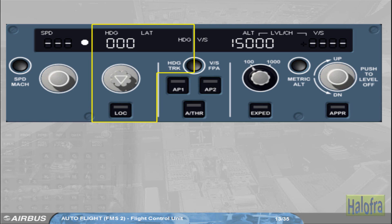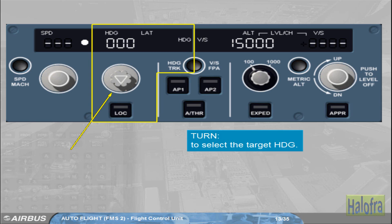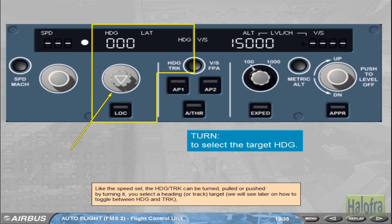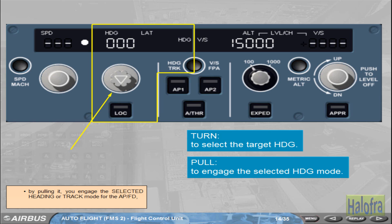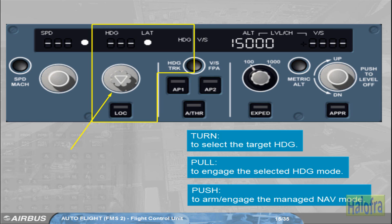Let's now learn more about the lateral area. Like the speed selector, the heading/track knob can be turned, pulled, or pushed. By turning it, you select a heading or track target. By pulling it, you engage the selected heading or track mode for the Autopilot/flight director. By pushing it, you arm/engage the managed navigation mode for the Autopilot/flight director, which will guide the aircraft along the active leg of the primary flight plan. In this case, the window displays dashes as well as an illuminated white managed lateral dot.